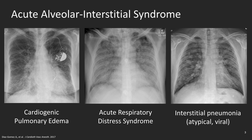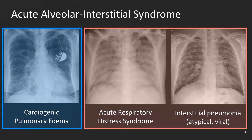In lung ultrasound this is seen as bilateral B pattern — that is, many B lines across both lungs. However, what is most interesting is that with lung ultrasound we can go further and evaluate the pleural line and the peripheral lung parenchyma, something that chest x-ray cannot do very well. With lung ultrasound we can group these three disease states into two subgroups: one for cardiogenic pulmonary edema and another for ARDS and interstitial pneumonia.